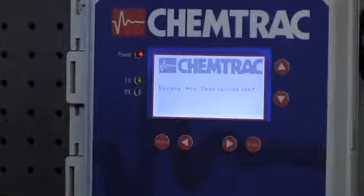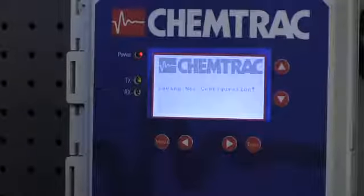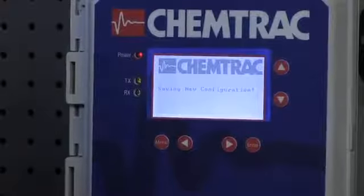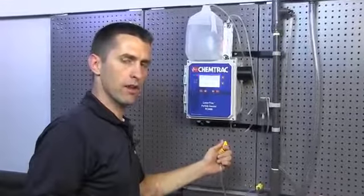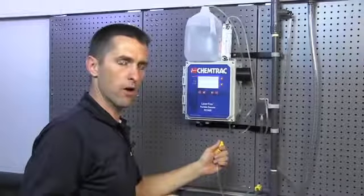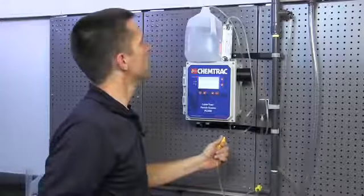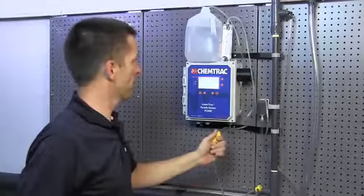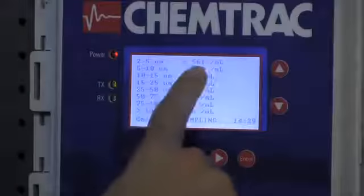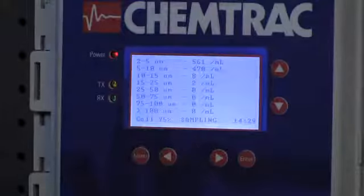And so what we have done now is we've done a manual adjustment to that calibration threshold. It wasn't necessary to do it, but just to demonstrate the fact that that can be done. And what we should see now is that our counts in the 2 to 5 are a little bit higher than they were before compared to the counts in the 5 to 10. We'll make sure our flow rate is right at the 75 per milliliter mark. So now, you can see we have 561 counts in the 2 to 5 and 470 counts in the 5 to 10.